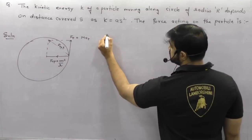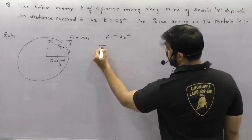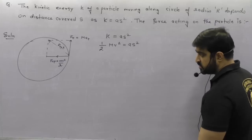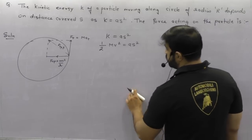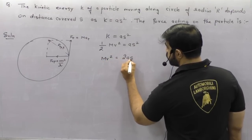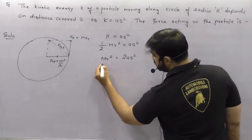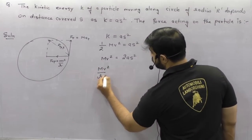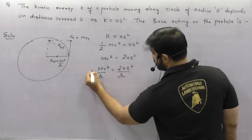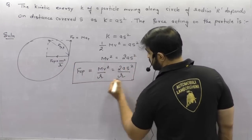First, find centripetal force. Kinetic energy is given as as², and kinetic energy is (1/2)mv² = as². So mv² = 2as². Therefore mv²/r = 2as²/r — this is the centripetal force.